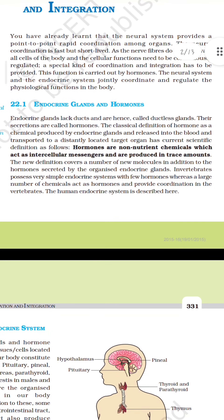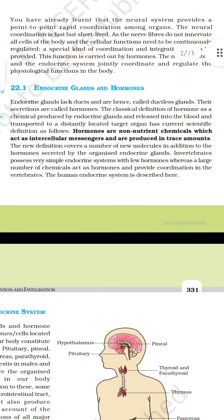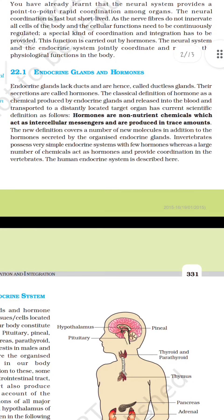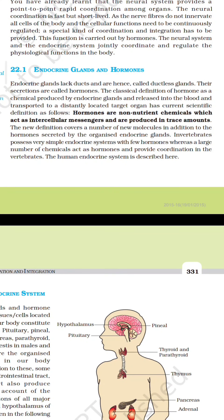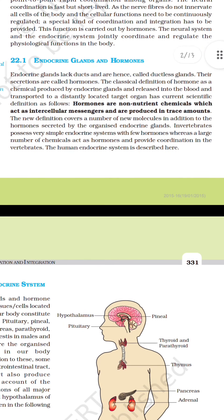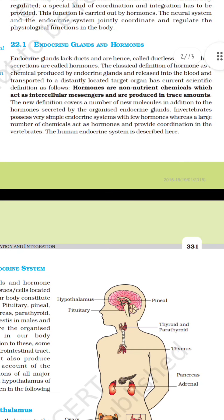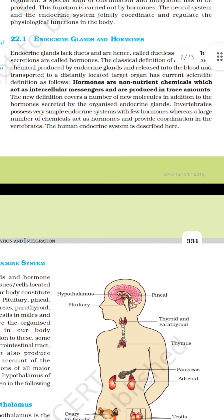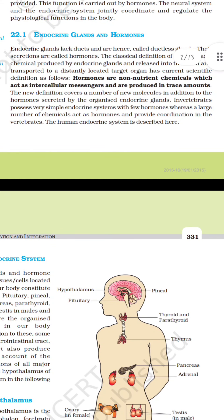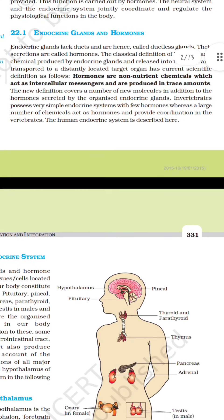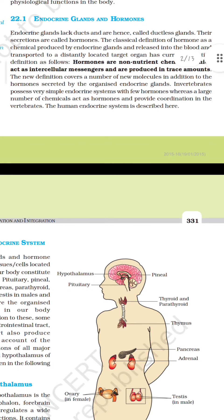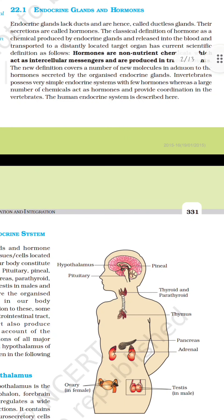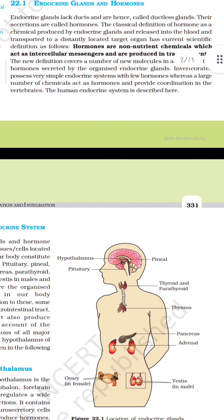Endocrine glands and hormones. Endocrine glands lack ducts and are hence called ductless glands. Their secretions are called hormones. The classical definition of hormone as a chemical produced by endocrine glands and released into the blood and transported to a distantly located target organ has a current scientific definition as follows: hormones are non-nutrient chemicals which act as intercellular messengers and are produced in trace amounts. Invertebrates possess very simple endocrine systems with a few hormones, whereas a large number of chemicals act as hormones and provide coordination in the vertebrates.